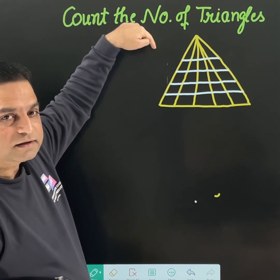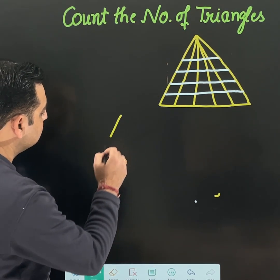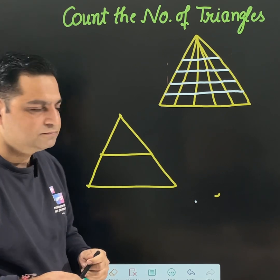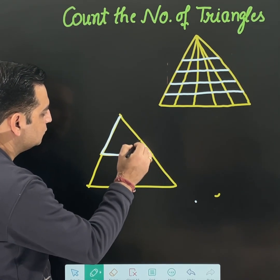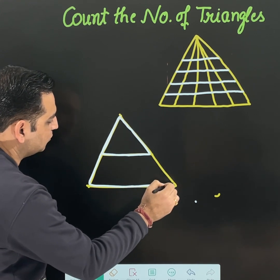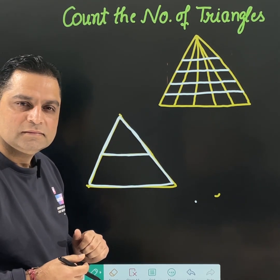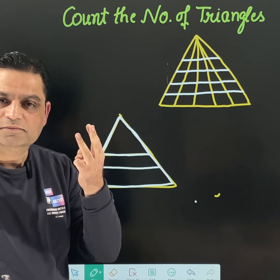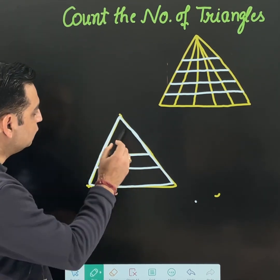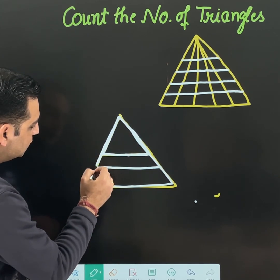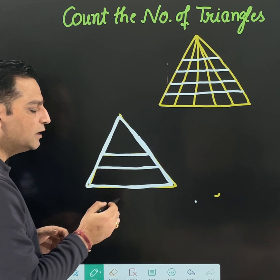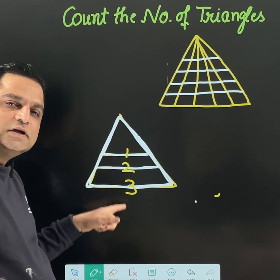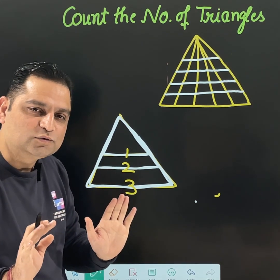Another element in my original diagram is horizontal lines. Let's suppose only one horizontal line is there — how many triangles would be there? Triangle number one and triangle number two — two triangles. If you have one more horizontal line, the number of triangles becomes three. Check my pointer: diagram one, two, and three. That means you just need to count the horizontal lines to get the total number of triangles in this case.